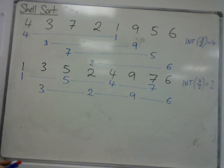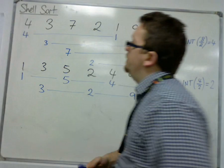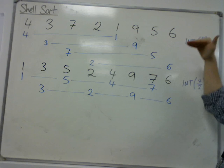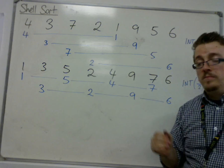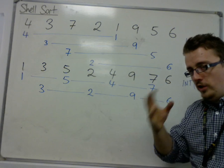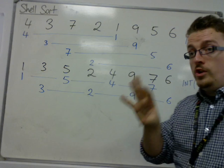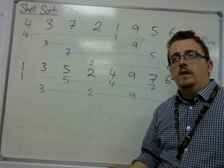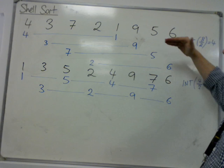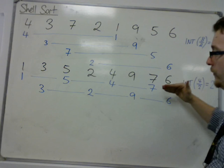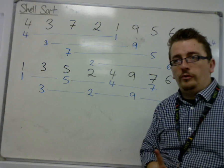Now, effectively, what we did at this stage, when we compared 4 and 1, or 3 and 9, or 7 and 5, or 2 and 6, was we actually did a shuttle sort. We actually did a shuttle sort on those two numbers. There's no point in actually writing that down as a shuttle sort. But at this stage, we were doing shuttle sorts, and at this stage, we also do shuttle sorts.